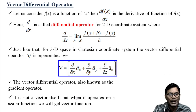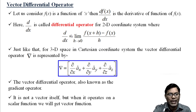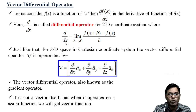First, we are going to understand the vector differential operator. To understand it, let us consider the function f(x). If we take the derivative of f(x), we get d/dx of f(x). This d/dx is called the differential operator for the two-dimensional coordinate system. Its mathematical representation is the limit as h tends to 0 of [f(x+h) - f(x)] / h.